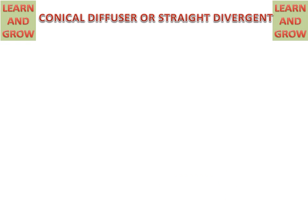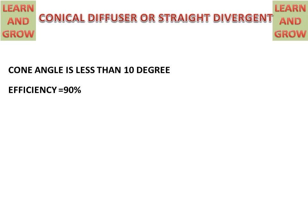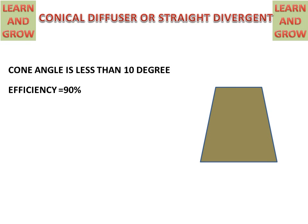Conical diffuser or straight divergent type of draft tube. The cone angle will be less than 10 degrees, because if the angle is too high then cavitation will occur. Water will enter from the upper side and exit from the lower side. This cone angle must be less than 10 degrees.